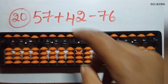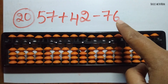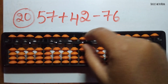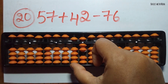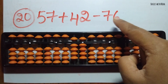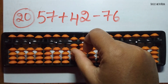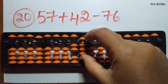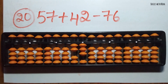The 20th sum: 57 plus 42 minus 76. First take 57. Now we should add 42 — add 4 directly and add 2 directly. Now we should minus 76 — minus 7 can be done directly in the 10's rod and minus 6 can be done directly in the 1's rod. The answer is 23.